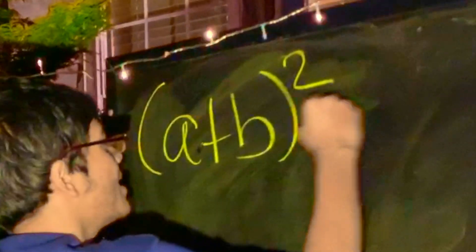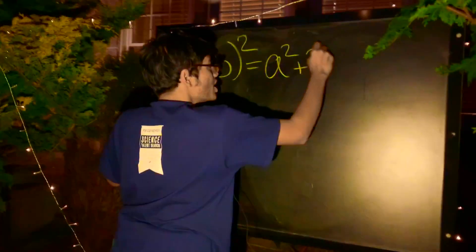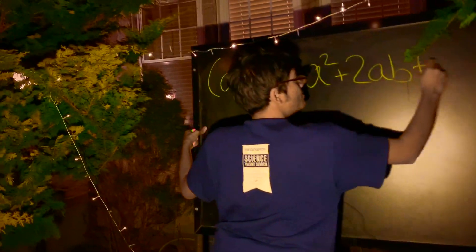Well, hopefully you remember that A plus B squared is simply A squared plus 2AB plus B squared.